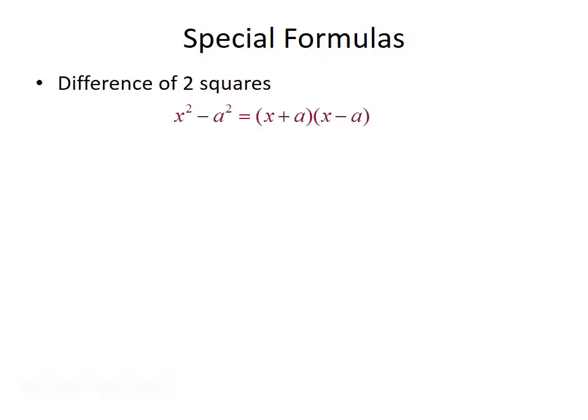We have some special formulas we can use when trying to factor polynomials. The first is the difference of two squares. If your polynomial takes the form of one term squared minus another term squared — so x squared minus a squared — you can factor that out to be x plus a times x minus a.